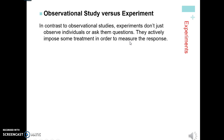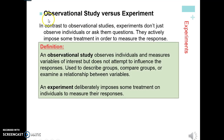For example, you would say go run three miles — what happens to your blood pressure? You go run five miles — what happens to your blood pressure? Not just saying these people already chose to run three miles; you are telling somebody what to do with an experiment. An observational study observes individuals and measures variables of interest but doesn't attempt to influence the response. It's used to describe groups, compare groups, or examine a relationship. With an observational study, you're not imposing or telling anybody to do anything.